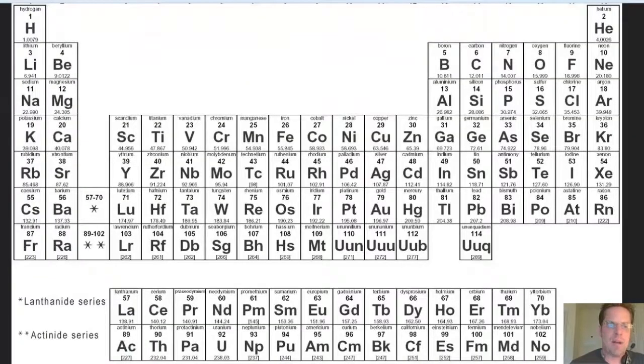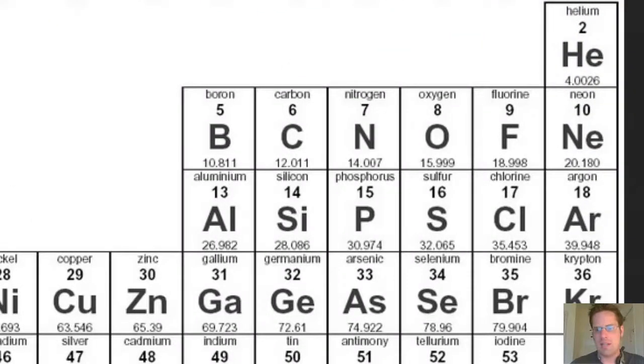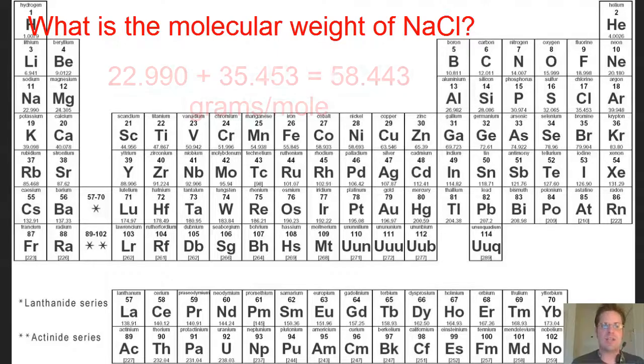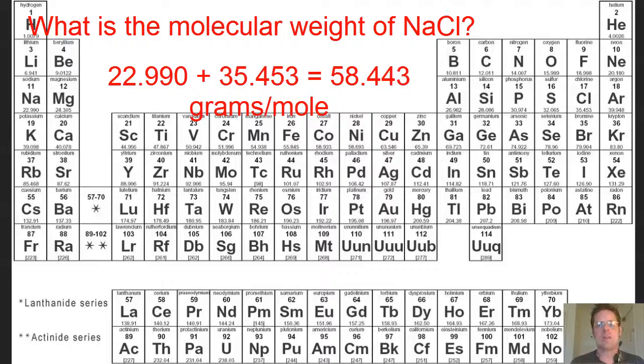We can determine this by looking at the periodic table. As we look at a simple periodic table, you will note that sodium's atomic weight is 22.990. You'll also note that chlorine's atomic weight is 35.453. So what is the molecular weight of sodium chloride? Well, each molecule of sodium chloride is comprised of one sodium and one chlorine combined. So the molecular weight of sodium chloride is going to be 22.99 plus 35.453, which equals 58.443 grams.